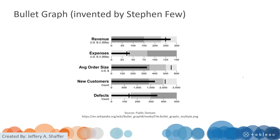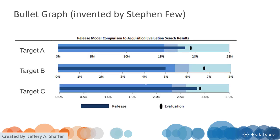Here are some examples. It is very easy to compare across different categories to see whether or not we have reached our goals — it's very easy to see and compare performance. In Tableau, we can create a bullet graph in just one step, and we will see that in today's lab.